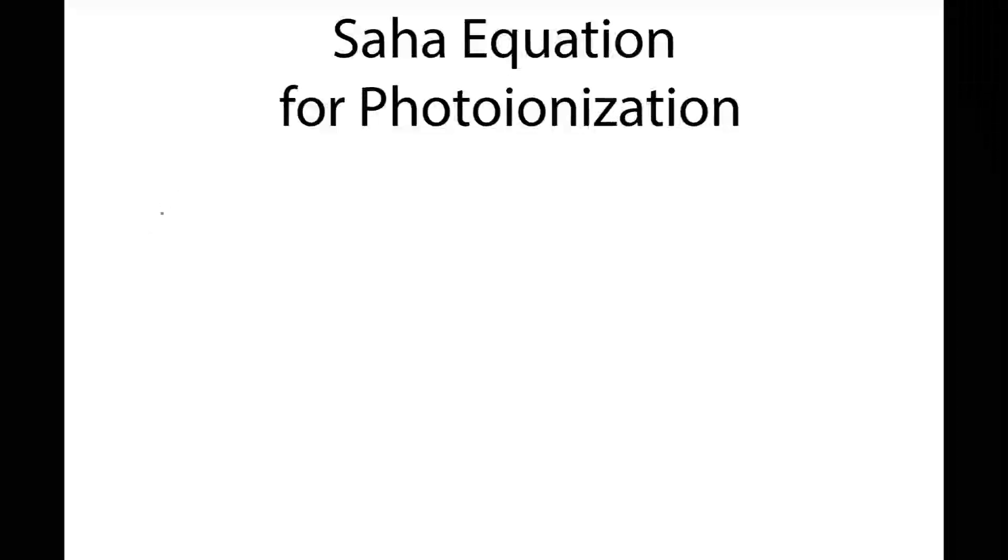In this video we're going to talk about the Saha equation for photoionization. Photoionization is the process by which a photon comes in and strikes a neutral atom, for example hydrogen, and knocks off one of the electrons so that we end up with an ion. In the case of hydrogen this might be just a single proton, but in a general atom this might be an ion and separately we have the electron moving off with some velocity v. This is photoionization, the ionization of an atom with photons.